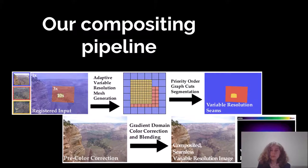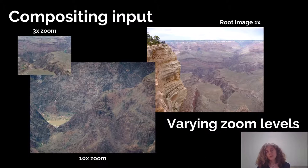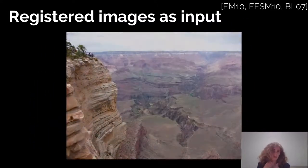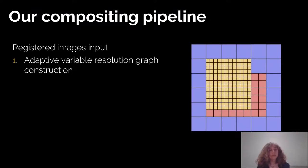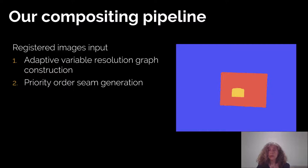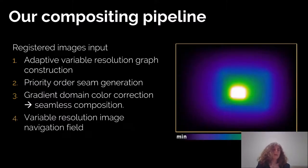To do so, we'll have different steps. We start from a collection of images with varying zoom levels that have been registered as our input. We build an adaptive variable resolution graph that allows us to compute seams, then do a gradient domain color correction to achieve a seamless composition. Finally, the image is viewed using a variable resolution image navigation that we will present.